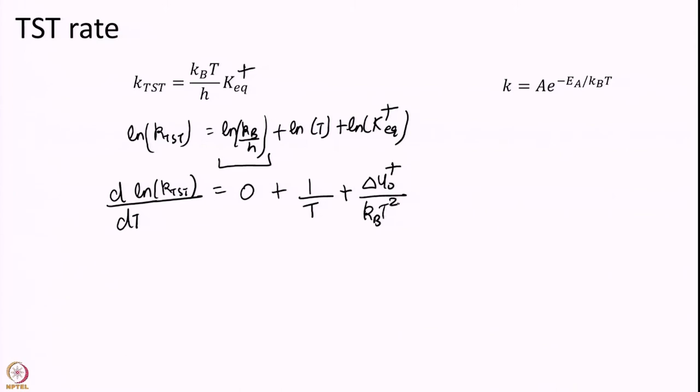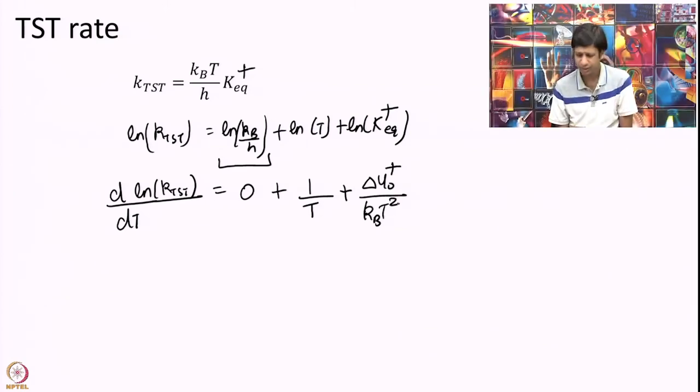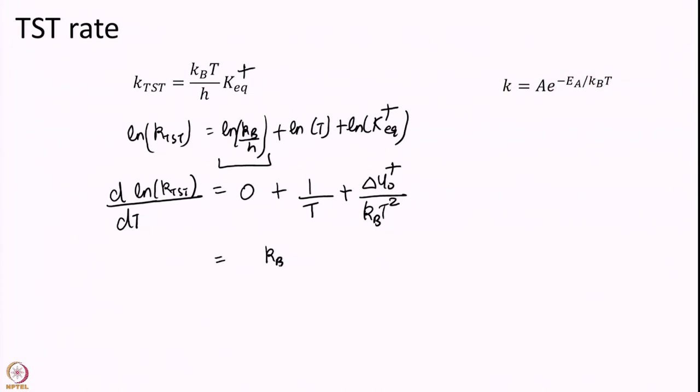As in some slides you might see R or in some slides you might see KB. They are the same thing. It is just a matter of units. I try to use KB at all places. But if you see R somewhere do not worry. It is not a mistake really. It is just a different dimension. So, let me just rewrite this as KT plus delta U naught over KT square.